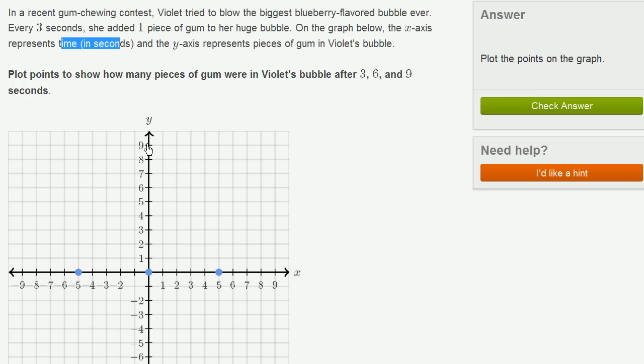Plot points to show how many pieces of gum were in Violet's bubble after three, six, and nine seconds. So every three seconds, she adds one piece of gum.